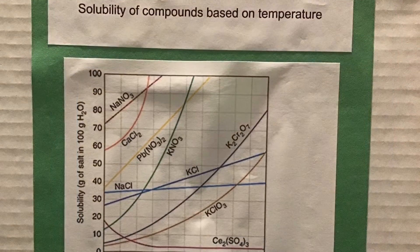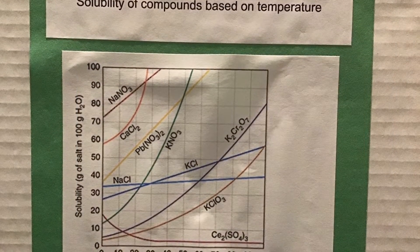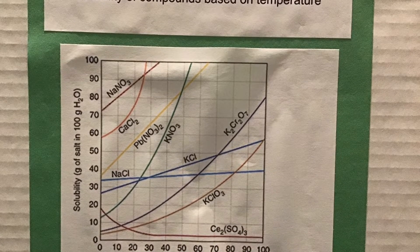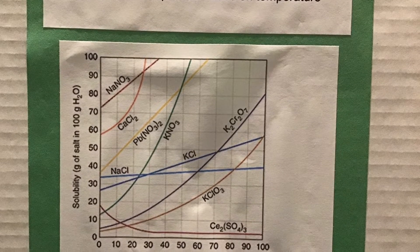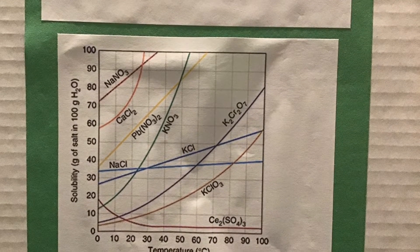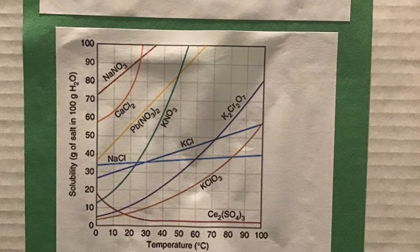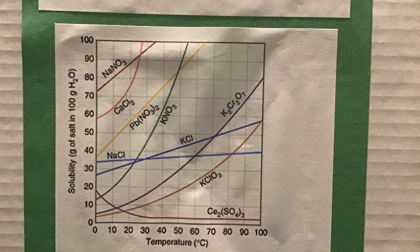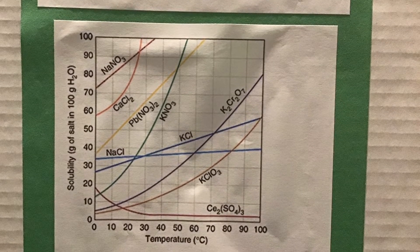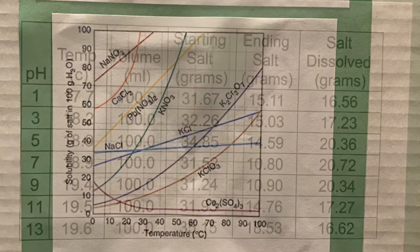In this graph, you can see the solubility of compounds based on temperature. I chose sodium chloride, the light blue line, because it varies least based on temperature. That is why I chose it as my solute.